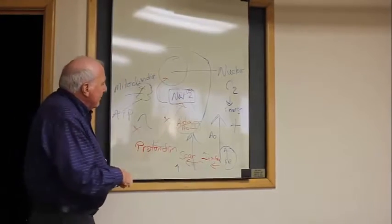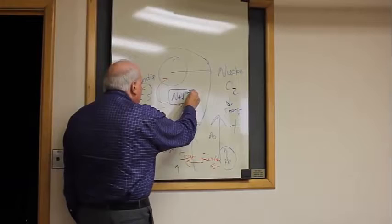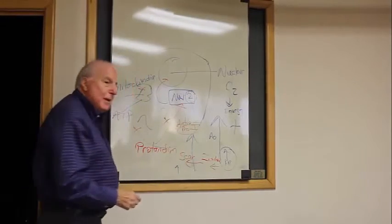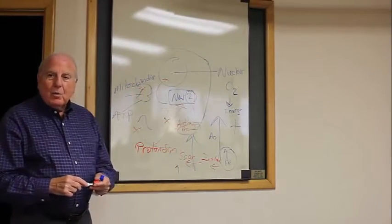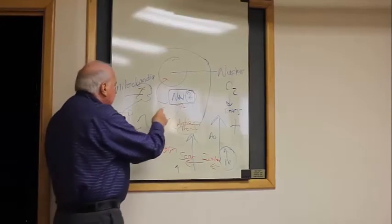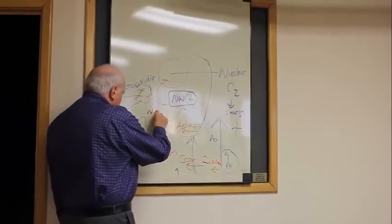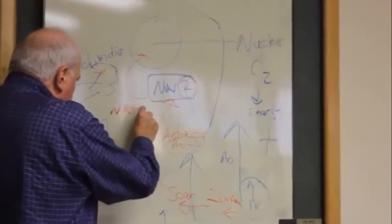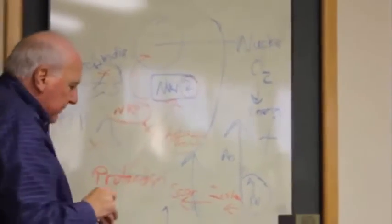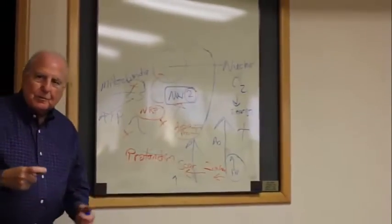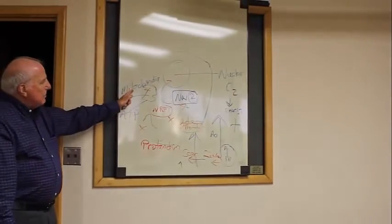Now focus for a minute on this is called NRF2. Well if there's a 2 there must be a 1. And there is a 1. And the 1 is another transcription factor. And that factor, NRF1, is a very interesting compound of herbs that activates the mitochondria.